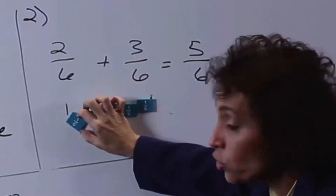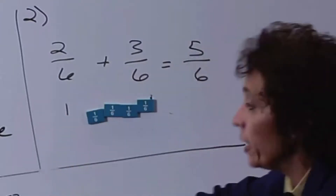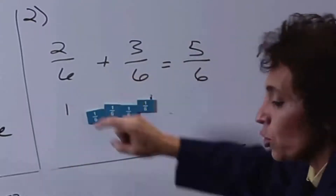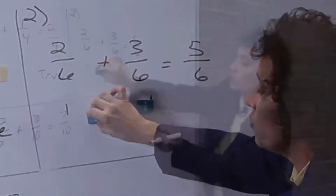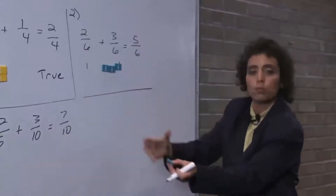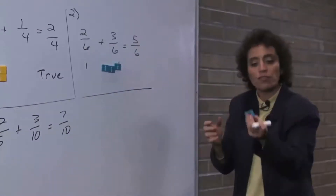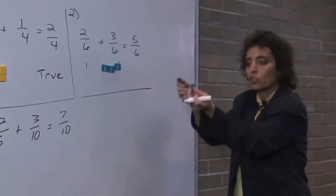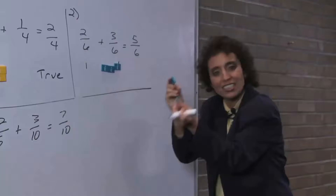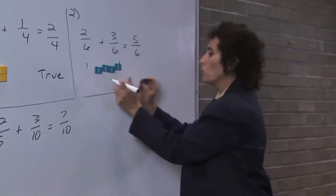Notice why that's true — these are like terms you're adding. You're adding two sixths, two of these pieces. So I have two sixths plus three sixths. That has to be five sixths, because these pieces are sixths. So that's obviously true also.